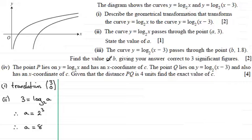Right well that's the first two parts done. We'll just border that off and we move into part 3 now. I'll read it out to you and you might like to try it. So we've got here the curve y equals log base 2 of (x minus 3) passes through the point with coordinates (b, 1.8). And we've got to find the value of b giving the answer correct to three significant figures. So again just give you a few moments to pause the video if you want to have a go.